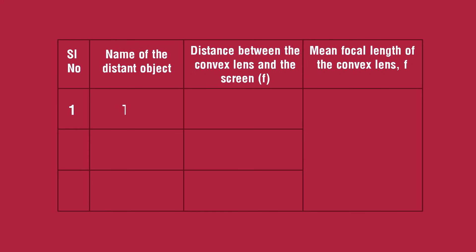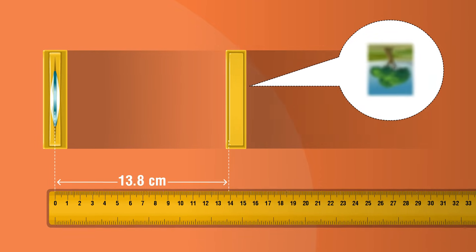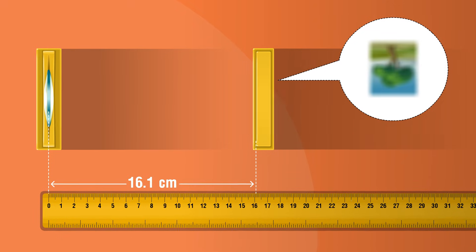Record the observation as the focal length of the lens. Repeat the experiment at least three times and record it in the observation table.